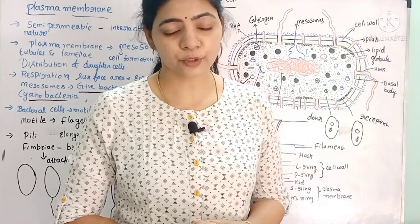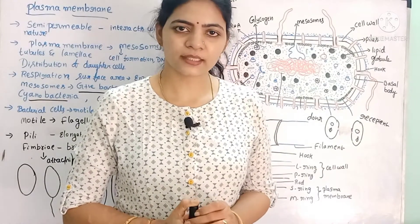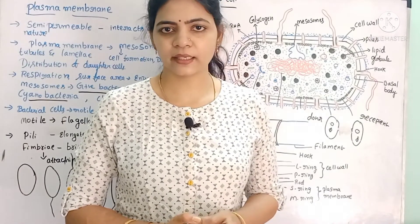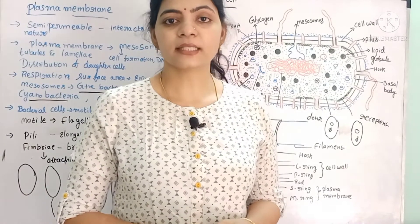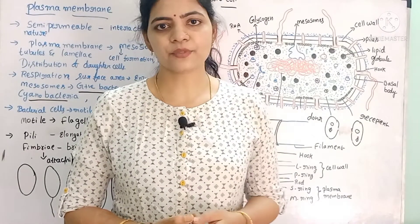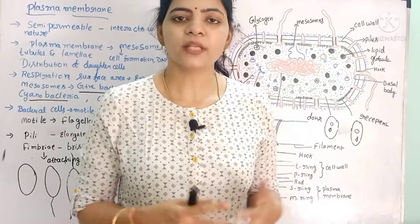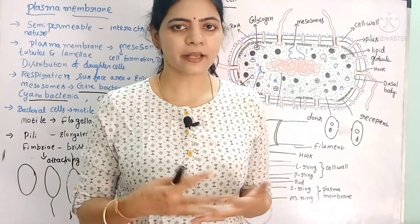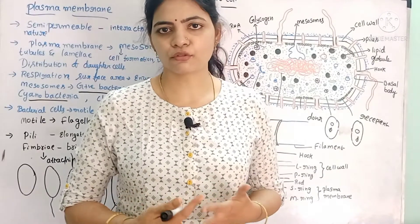In the gram positive bacteria, we have a lot of peptidoglycan content. The lipopolysaccharide layer is absent in gram positive bacteria. Using gram staining, you can distinguish gram positive bacteria from gram negative bacteria under the microscope.